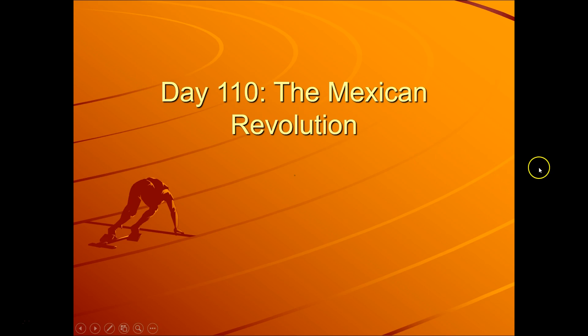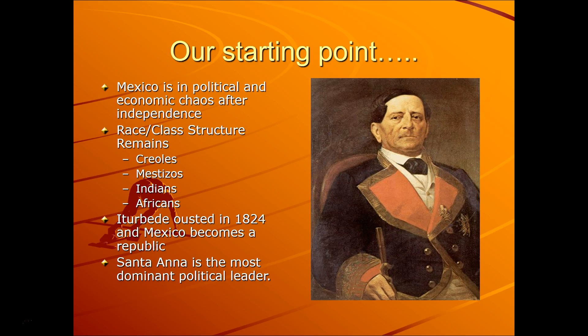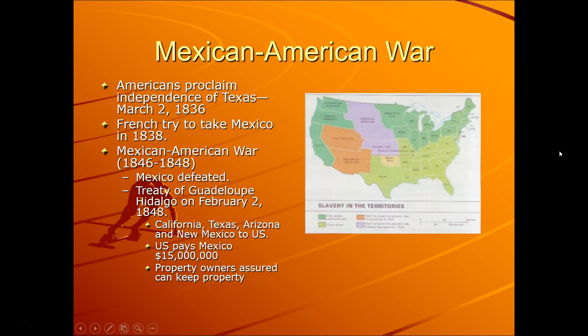Here's the more traditional story of the Mexican Revolution. Our starting point — even though the revolution occurred in 1910 — we're going to go about 90 years before. We start with Mexico being in political and economic chaos after independence. The Spanish racial and class structure remained throughout the Americas, with the exception of Brazil. In any of the colonies of Spain, your racial designation put you in your place in society — Creole, Mestizo, Indian, or African. Iturbide was ousted in 1824. Mexico becomes a republic, and Santa Ana is the most dominant political leader. We're starting at a very chaotic point.